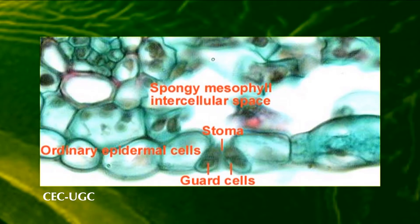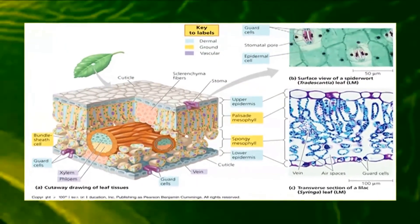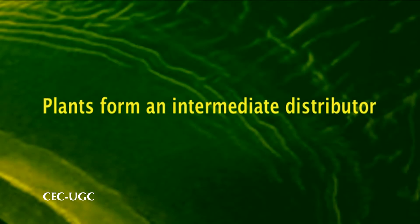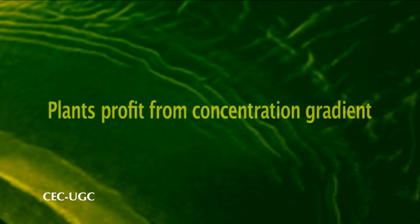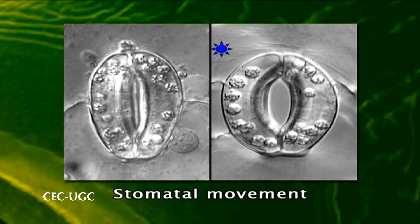Factors influencing stomatal movement. Water: Guard cells can lose water in three directions — outwards, into the neighboring subsidiary cell, and into the respiratory cavity beneath the guard cells. An equilibrium between water vapor of the atmosphere and the respiratory cavity results when stomata are opened. Since a large difference in water potential between the moist soil and the normally dry atmosphere is common, plants profit from the concentration gradient. The osmotic pressure in the guard cells is far larger than in the subsidiary cells; this ratio shifts in favor of the subsidiary cells when the stomata are closed.